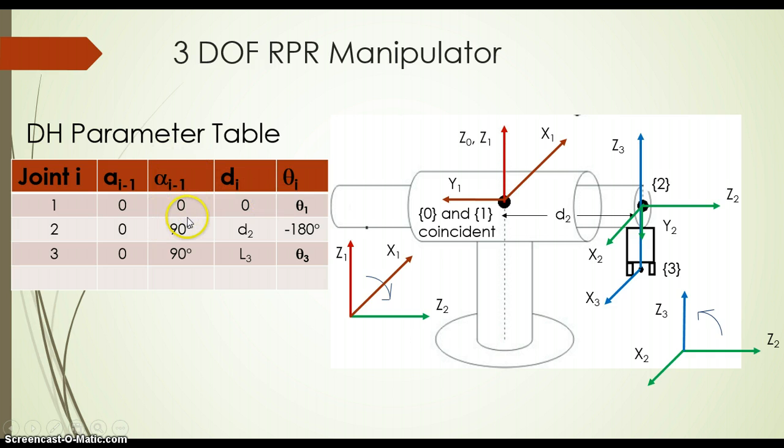Let us look at the DH parameter table. So joint 0, the base frame, and joint 1 will be coincident, so 0, 0, 0, theta 1 will be our parameter for joint 1. Now for joint 2, we have assigned x as x1 using right-hand rule perpendicular to both z1 and z2. As z1 and z2 are at 90 degrees, alpha will be 90 degrees. As z1 and z2 are intersecting, link length will be 0. Joint 2 is a horizontal sliding arm, so we have d2 as the joint variable.